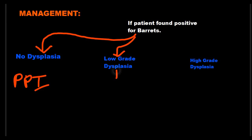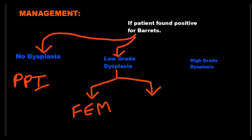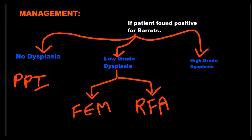If low-grade dysplasia is present, we have two choices: either recommend frequent endoscopic monitoring until the low grade progresses to high grade, or directly suggest radio frequency ablation. The third scenario is high-grade dysplasia, in which case we directly go for radio frequency ablation.